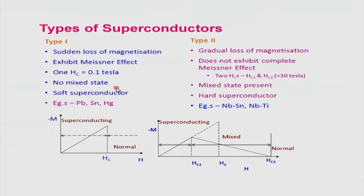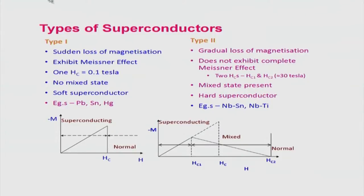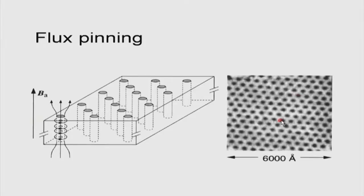The main differences between type 1 and type 2: type 1 shows a sudden loss of magnetization, while type 2 shows a gradual loss — the Meissner effect is not discontinuous. Type 2 has a mixed state where normal and superconducting regions coexist — these are generally hard superconductors, while type 1 are soft. Examples of type 1: lead, tin, and mercury. Type 2 examples include NbTi and Nb₃Sn alloys, which are commercially exploited.